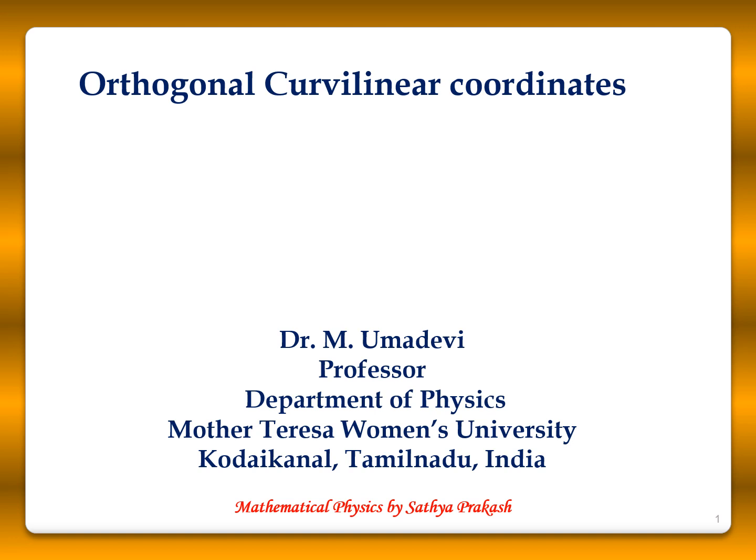We will now see what orthogonal curvilinear coordinates are. Curvilinear coordinates are a coordinate system for Euclidean space in which the coordinate lines may be curved. These coordinates may be derived from a set of Cartesian coordinates by using a transformation that is locally invertible at each point. This means that one can convert a point given in a Cartesian coordinate system to its curvilinear coordinates and back.